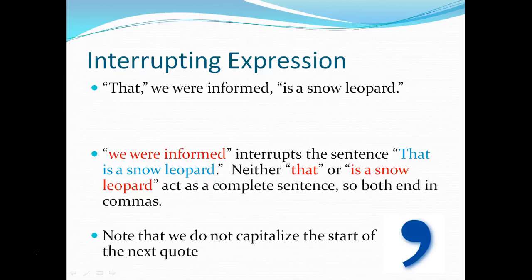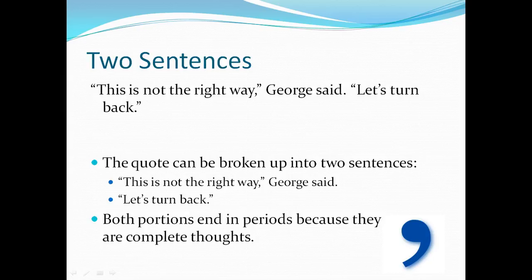You have to ask yourself if you're using an interrupting expression or an expression between two separate sentences. If we have two sentences — 'This is not the right way, George said. Let's turn back' — 'this is not the right way' is a complete sentence and 'let's turn back' is also a complete sentence. Because of that, we're looking at two separate portions of a quote with an expression between them, so we end each one in periods since they are complete thoughts.